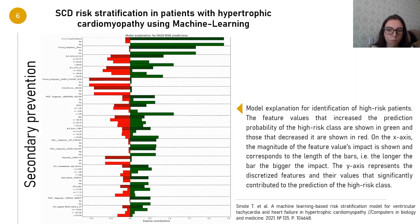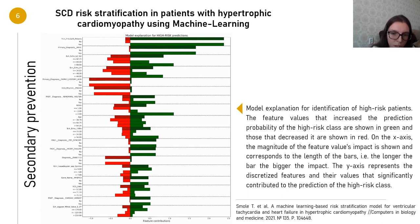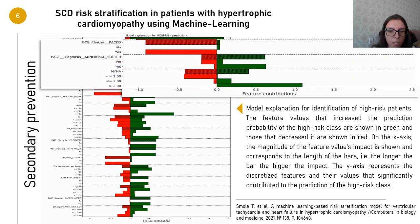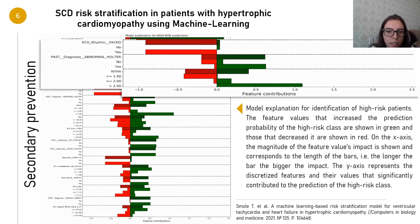Here you can see a model explanation for identification of high-risk patients. Factors that increase the prediction probability of high-risk class are shown in green, and those that decrease it are shown in red. For example, patients with NYHA class 1 have a reduced risk of death compared to patients with classes 3 and 4.